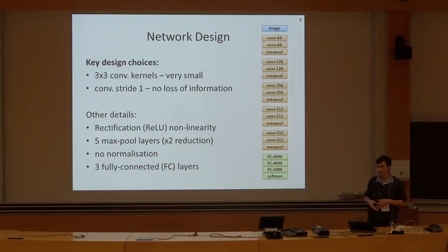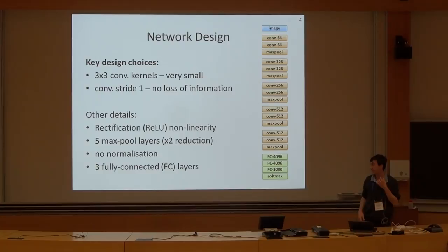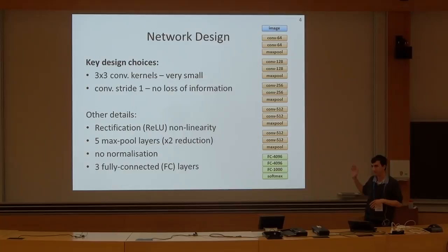Other details are quite conventional. We use rectification nonlinearity. We don't use any local response normalization layers, because we found that local response normalization does not really help for image classification. After these convolutional layers, we have fully connected layers. A typical example of our architecture is actually quite shallow — it contains just 14 weight layers. The number of channels starts from 64 in the first convolutional layer and increases up to 512.